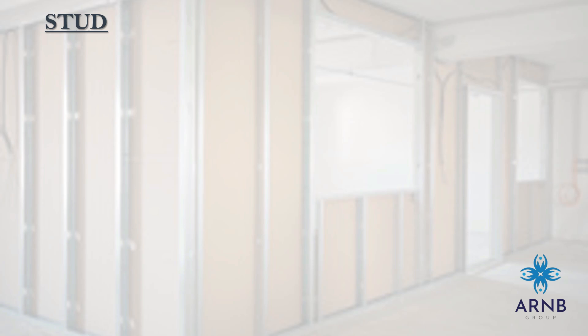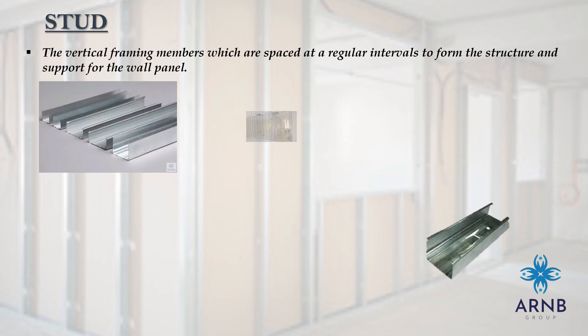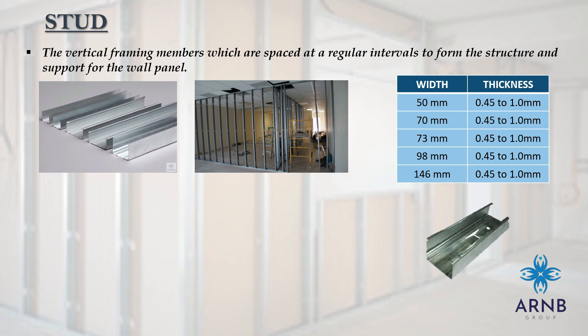The next component is stud. Stud is the vertical framing member spaced at regular intervals to form the structure and support for the wall panel. As shown in the picture, the horizontal members at top and bottom are tracks, and the vertical members arranged at a particular interval are studs. Stud is available in thickness ranging from 0.45 to 1 mm, with widths of 50 mm, 70 mm, 73 mm, 98 mm, and 146 mm. The 70 mm stud is most commonly used with a thickness of 0.45 mm, and a standard length of 3000 mm or 3 meters. For a 72 mm track, a 70 mm width stud is used for drywall partition.